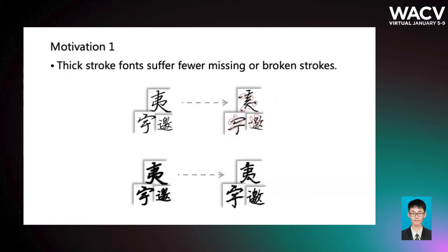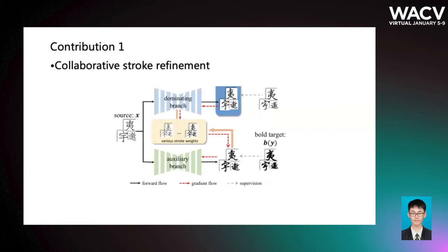Now I'm going to introduce our first motivation. Contrary to the thin issue, we observe that thick stroke fonts can suffer fewer missing or broken strokes. So we propose a collaborative stroke refinement method. The whole model is divided into three branches: a dominating branch, an auxiliary branch, and a refinement branch.